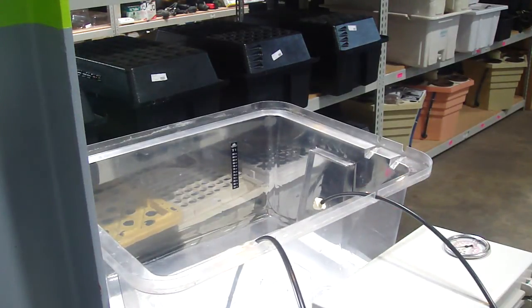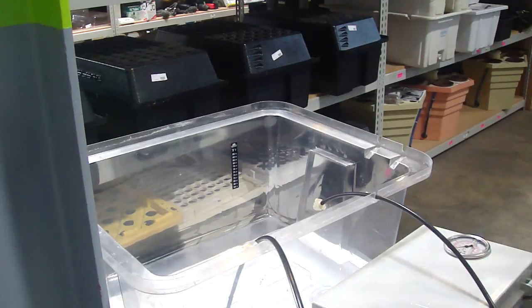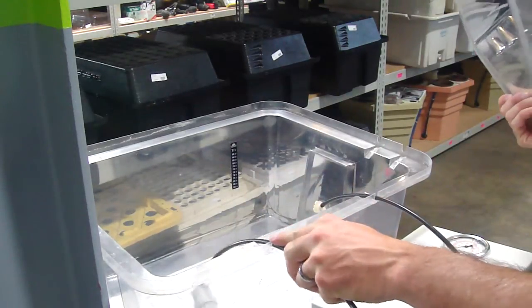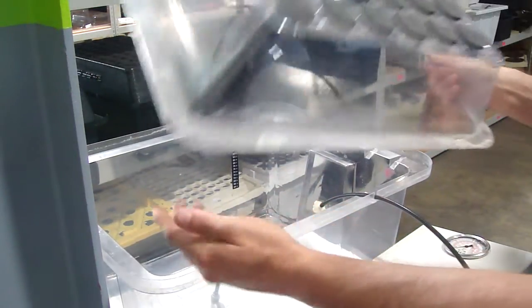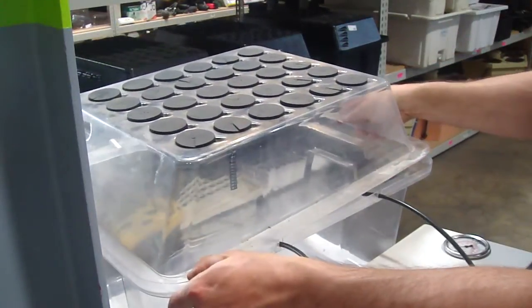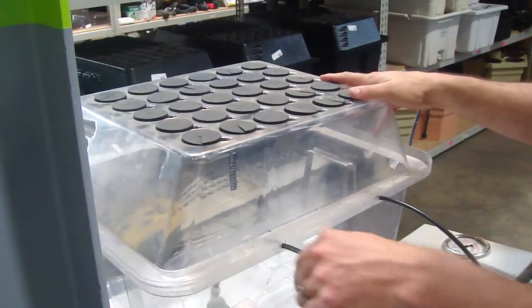And then just put the lid back on your EZ Cloner. And now you've got an EZ Cloner with a whole lot of life left in it. And you can also run additional T's off of this high pressure aero kit over to other components in your grow and run several tubs.